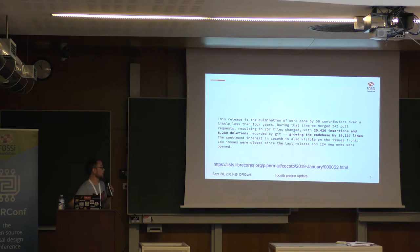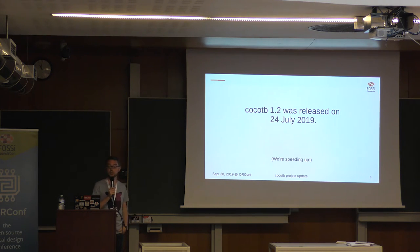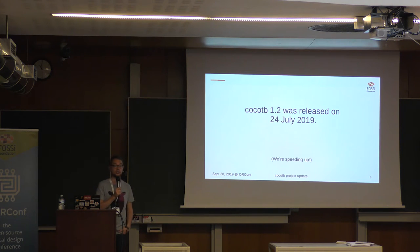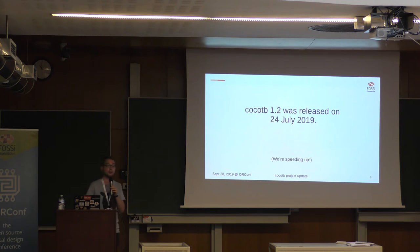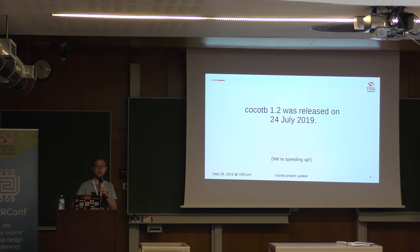Moving on, we were trying to speed up the release process and get stable releases out more quickly. In July we had the CocoTB 1.2 release, and that's roughly the cadence we want — about every three months. I wanted to do one shortly before this ORConf, but my vacation got in the way. So we still need to get better at spreading the workload. But we're speeding up.